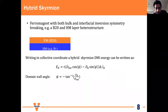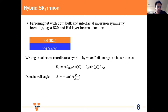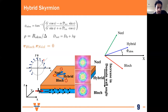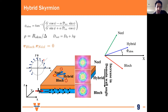One interesting case is using B20 materials — which have bulk inversion symmetry — combined with heavy metal layers that provide interfacial symmetry breaking. This results in a hybrid skyrmion whose domain wall angle depends on the ratio of the two types of DMI: the interfacial DMI and the bulk DMI. For pure Bloch and Neel skyrmions, they move perpendicular to each other, but for a hybrid skyrmion, the movement direction is somewhere in between, depending on this domain wall angle.